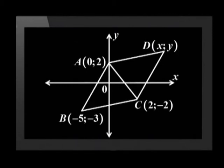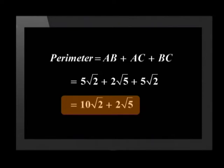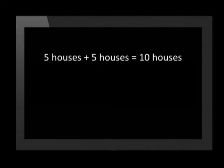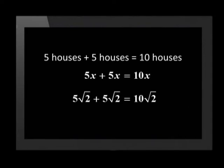The question asked us to find the perimeter without the use of a calculator. Let's add the lengths of the three sides: 5√2 plus 2√5 plus 5√2 equals 10√2 plus 2√5. This answer looks a little complicated but it's actually quite simple. In algebra, when we add like terms, the kind of things we add stay the same. For example, 5 houses plus 5 houses gives 10 houses, and 5x plus 5x gives 10x. In the same way, 5√2 plus 5√2 gives 10√2.